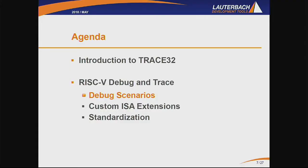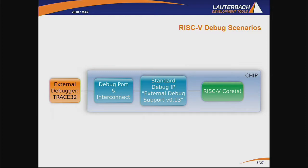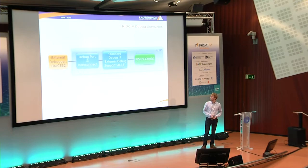Let's jump right into RISC-V debug and trace with the aid of some debug scenarios. First of all, a very high-level example. We have an external debugger — Trace32 on the left — and a RISC-V chip that we want to debug. There is a generic debug port and some interconnect, and also the standard RISC-V debug IP. Hopefully by now all of you are familiar that the RISC-V foundation, or the debug work group in particular, is currently designing a standard for RISC-V debugging.